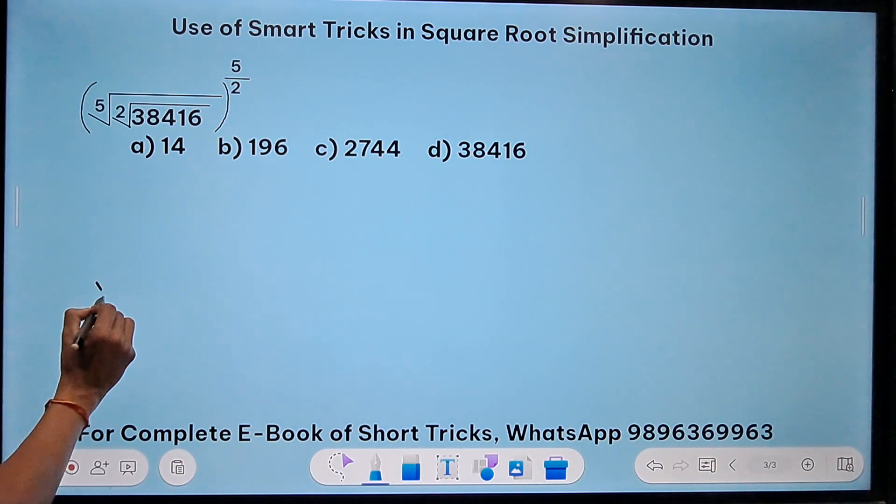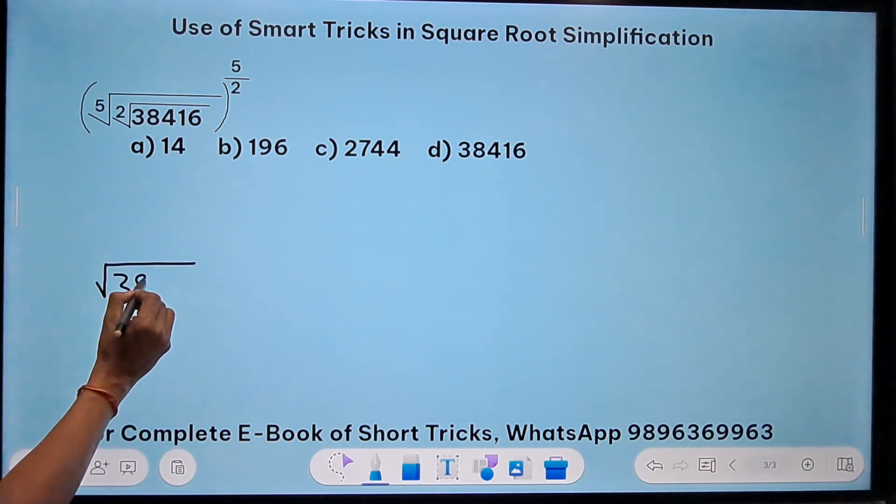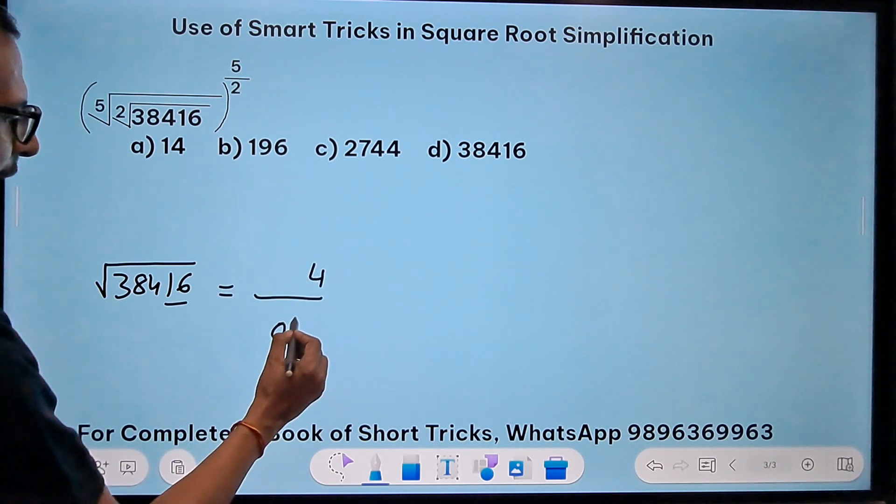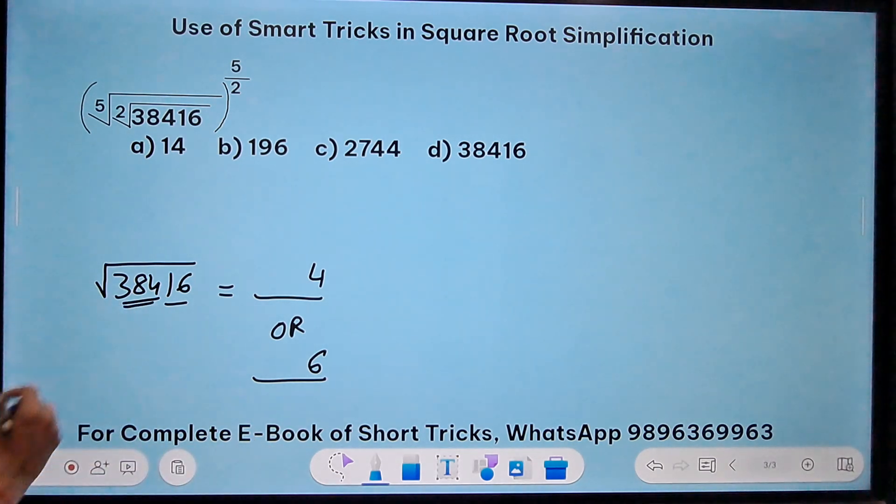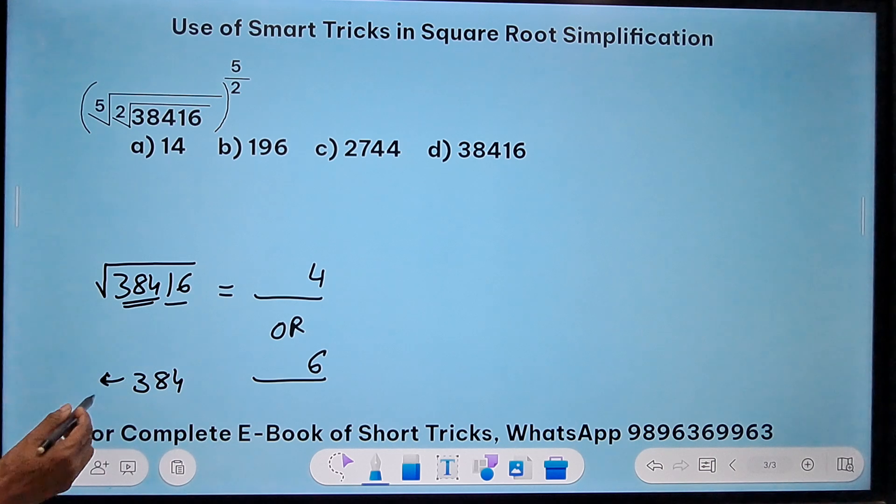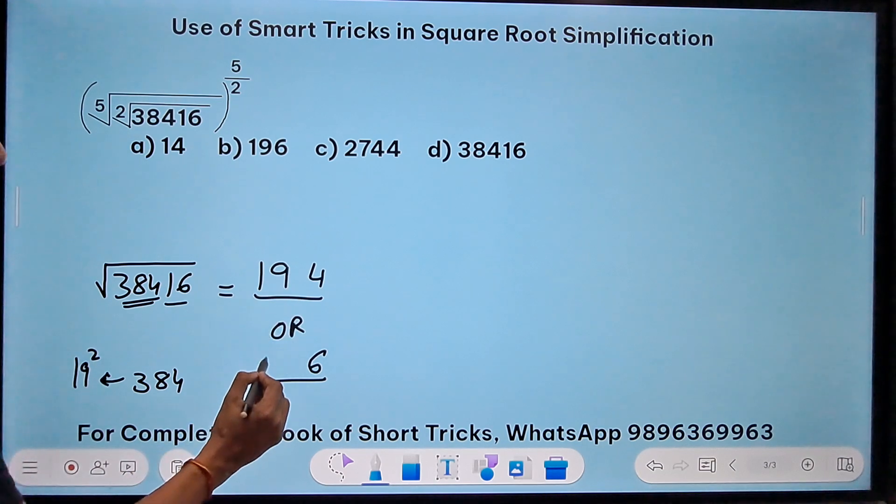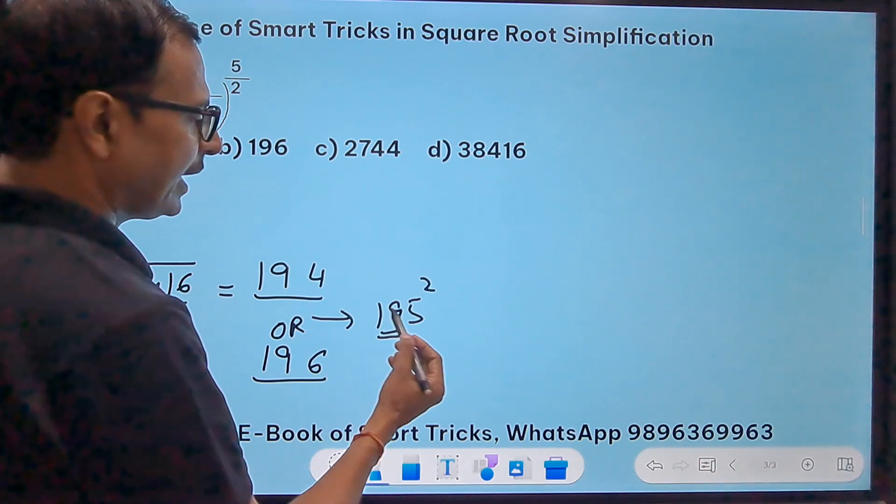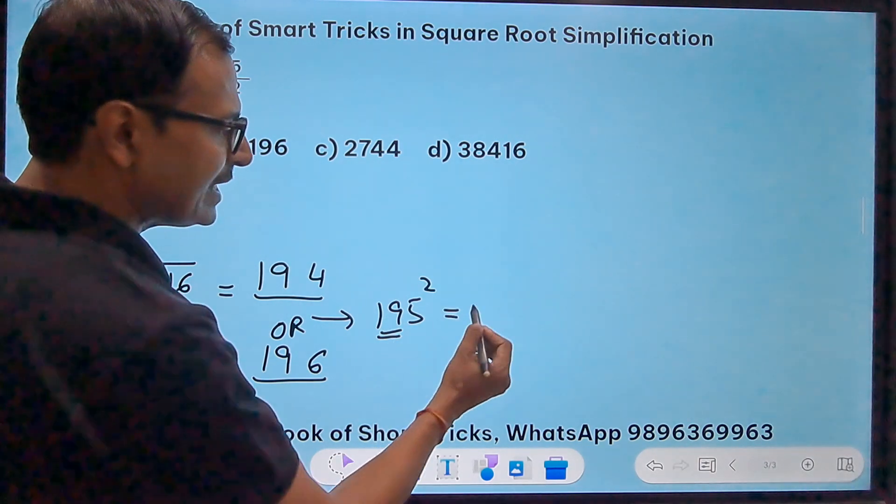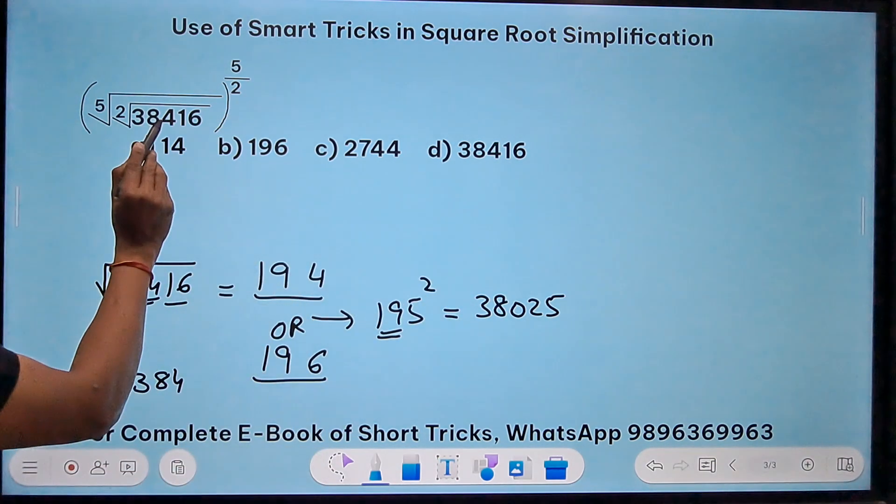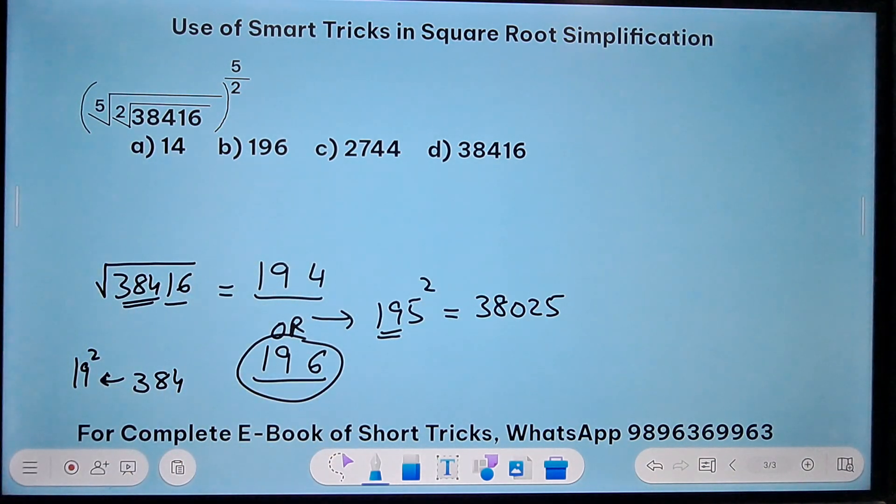Here we have square root of 38416. So let's do it again. 16 means ending in 4 or ending in 6. 384, now below 384, which one is the perfect square? See, 20 square is 400, so 19 square, 361. So 19 and 19. Now intermediate number is 195. How do you do 195 square? 19 into the next number 20 is 380, followed by a 25. And now compare this number and this number, this is greater. So my answer is the greater one, 196.